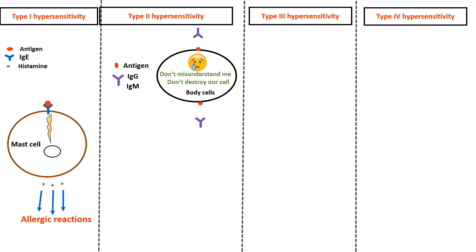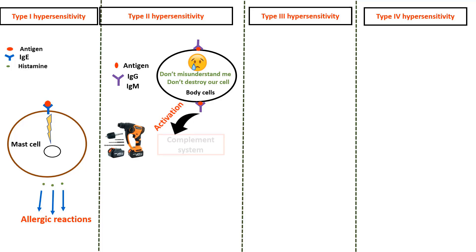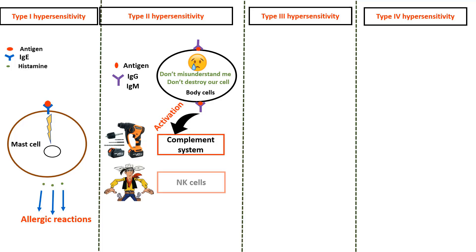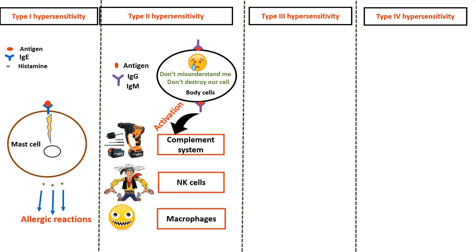Binding of IgG or IgM antibodies stimulates a cascade of immune reactions resulting in the activation of the complement system, natural killers and macrophages, which induce further damage to affected tissues.